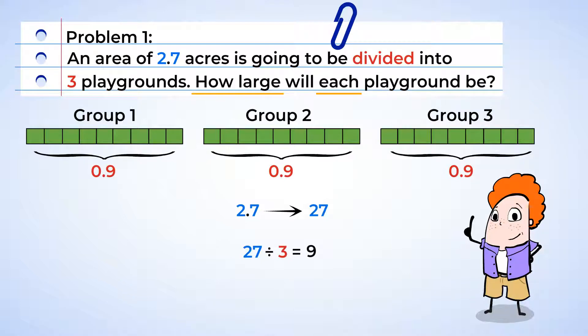So, the key thing here is to match the decimal points as you're working. In our problem, for 27 to be 2.7, we need to move the decimal point over one place to the left. And since we moved the decimal in 27, well, then we need to move the decimal in the answer as well.